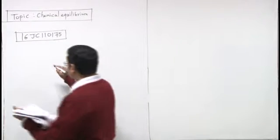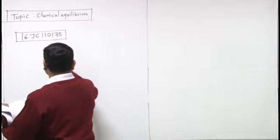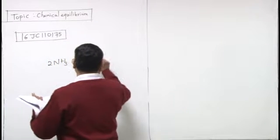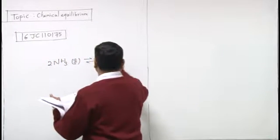This question means simultaneous equilibrium question. So pehle apne ko simultaneously equilibrated species ko identify karna hai - first we need to identify the simultaneously equilibrated species.